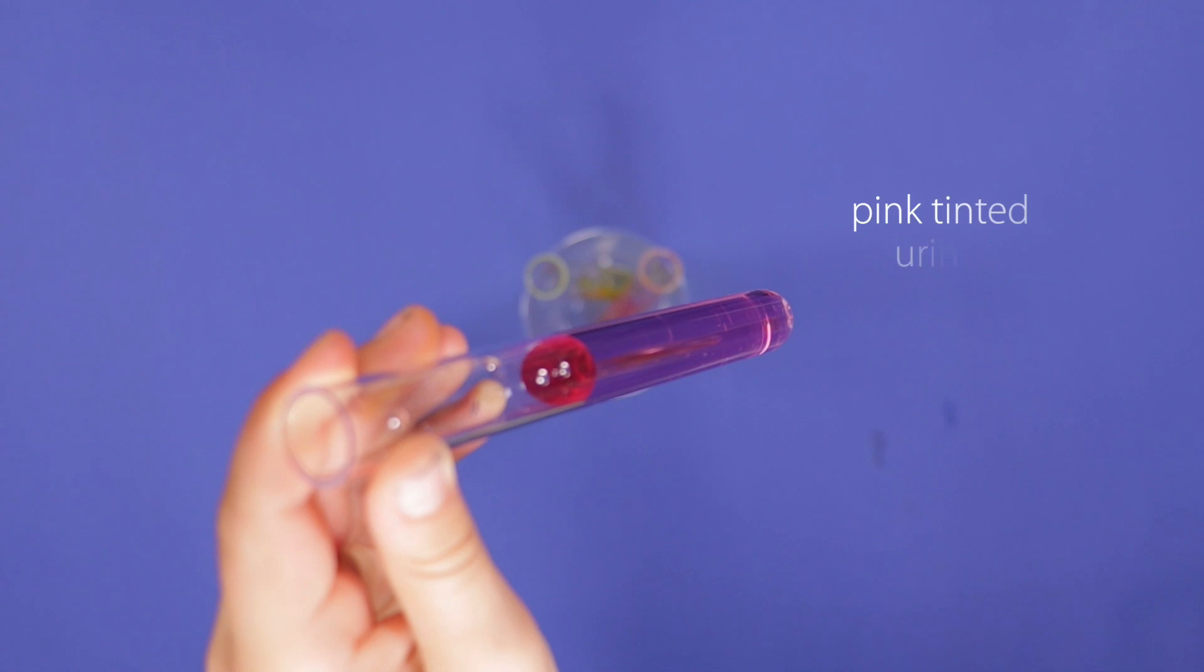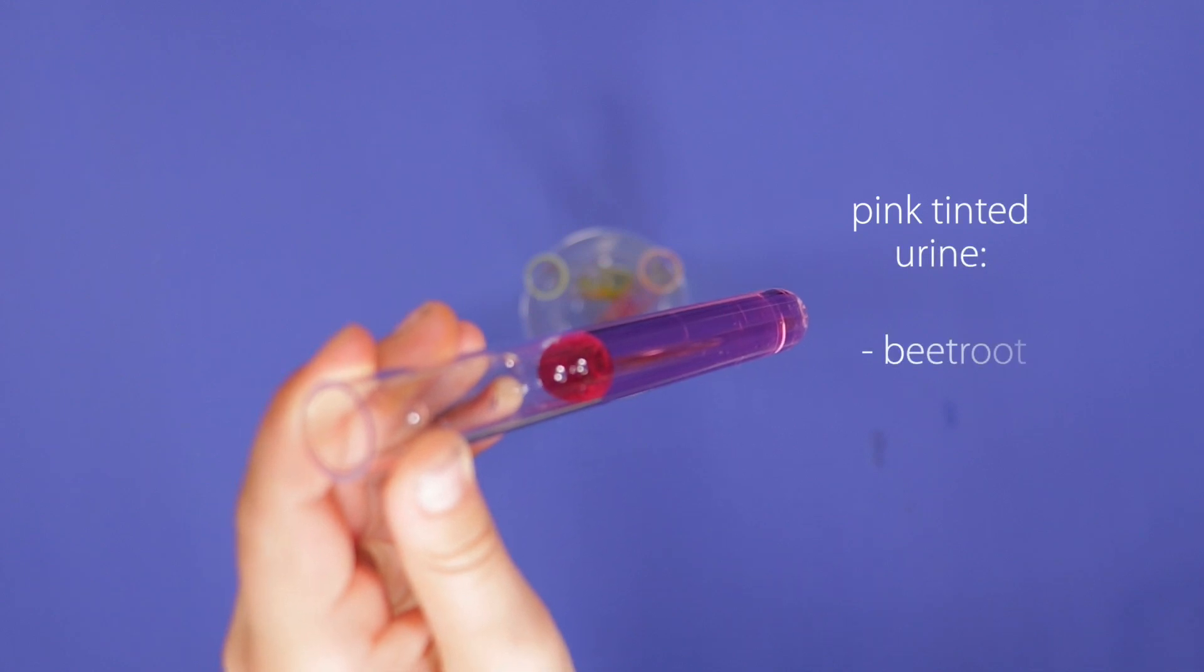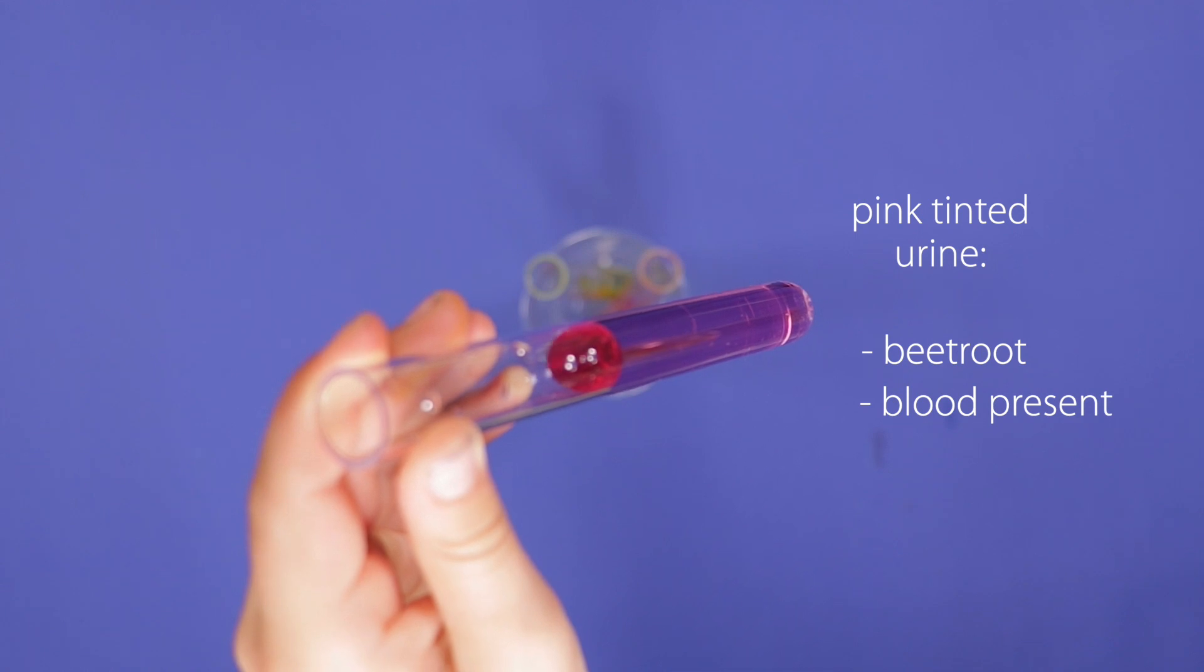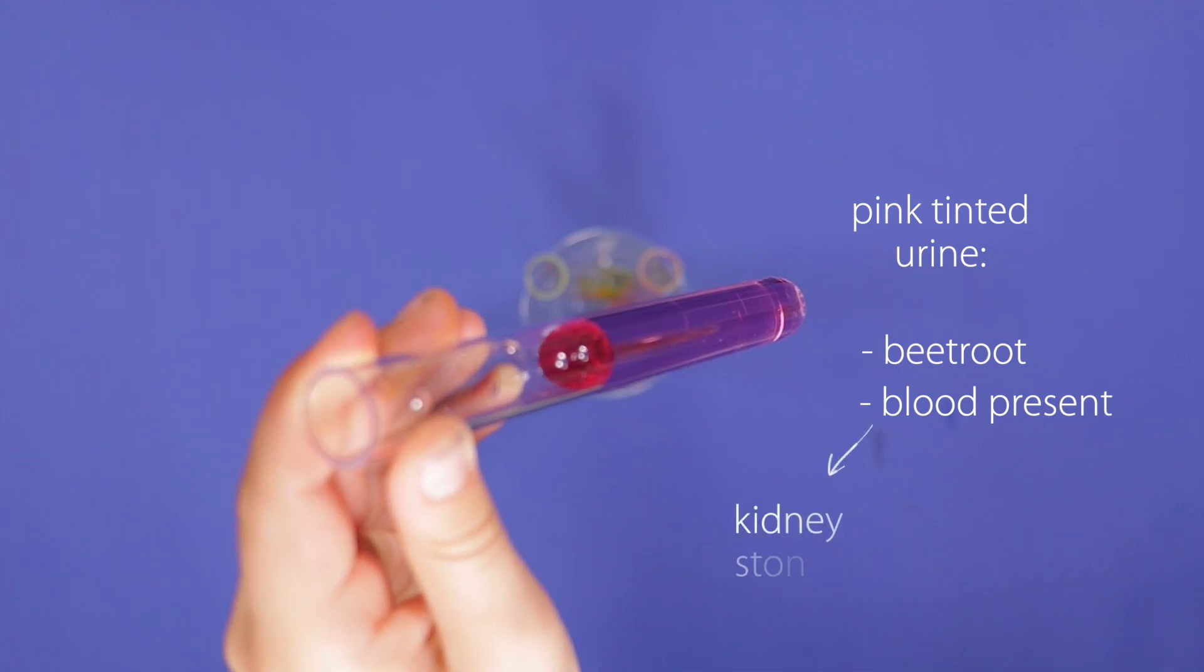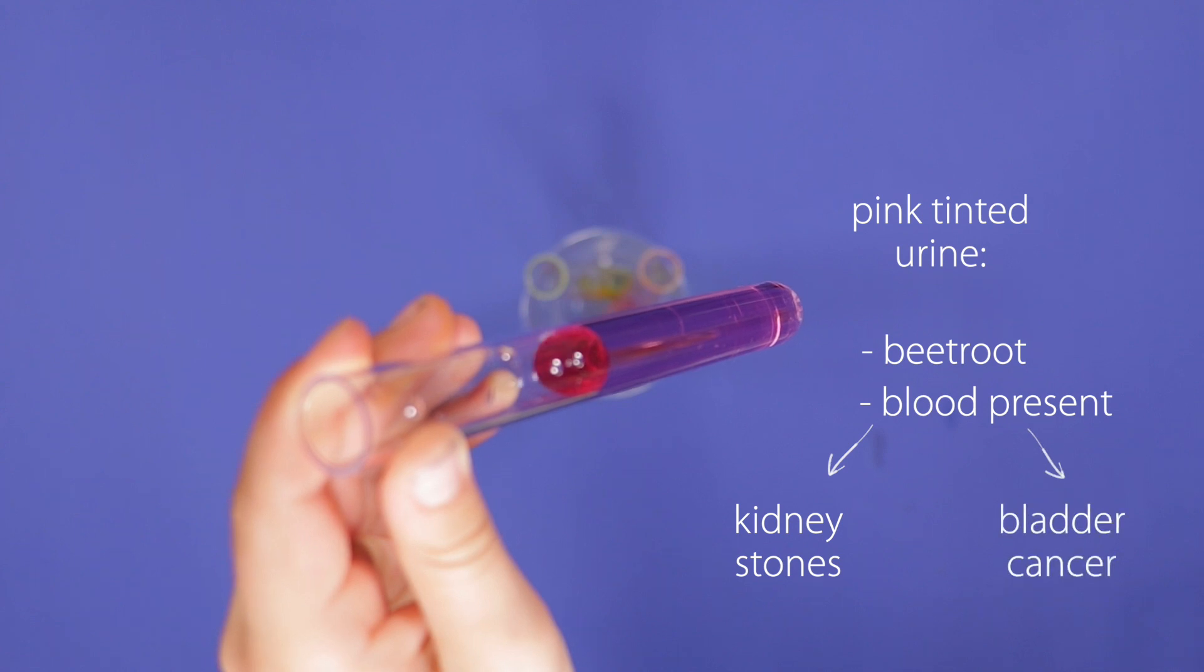And a pink tint to your urine can either mean you've eaten something like beetroot or that there may be some blood present. If there's blood it can be very serious such as kidney stones or bladder cancer and it will mean a visit to the doctor.